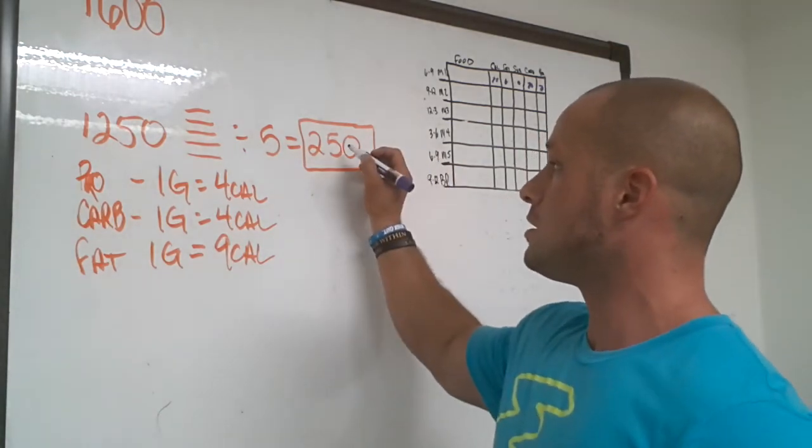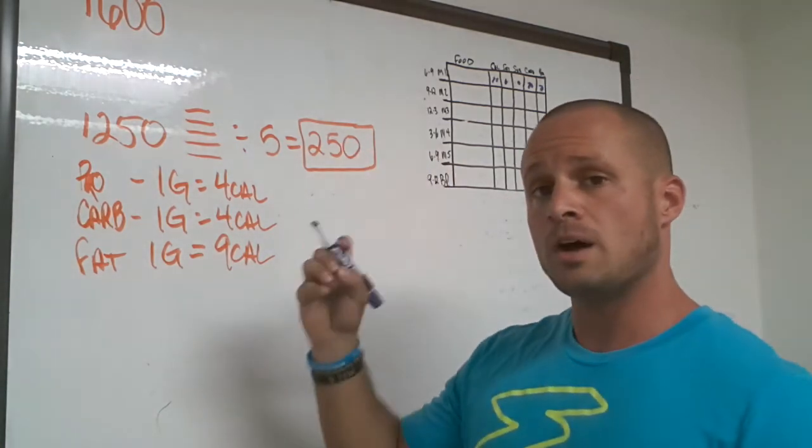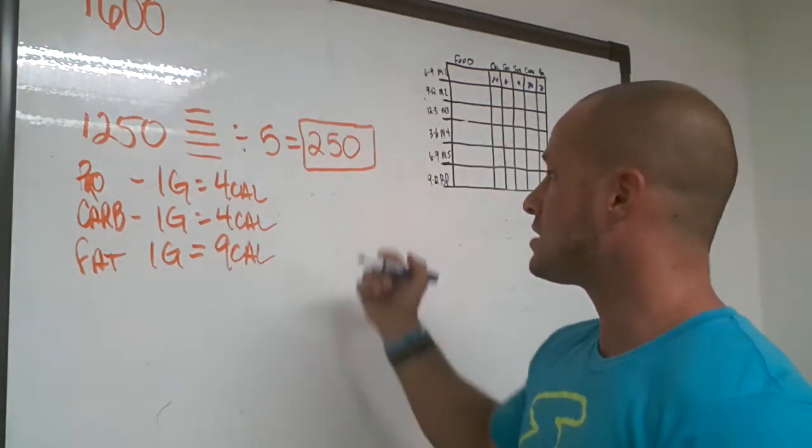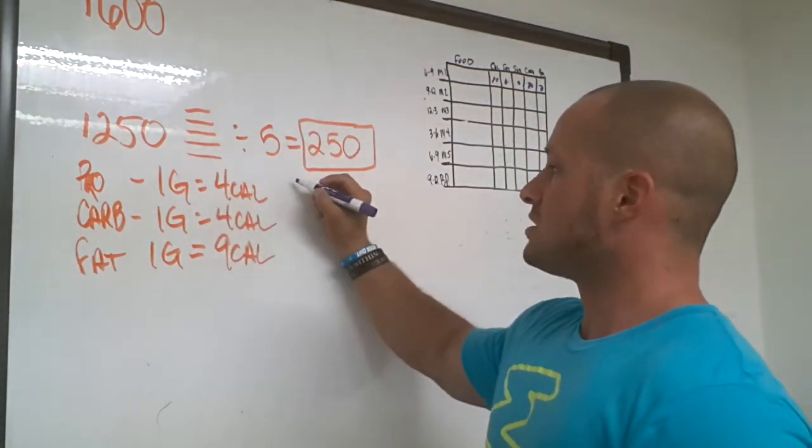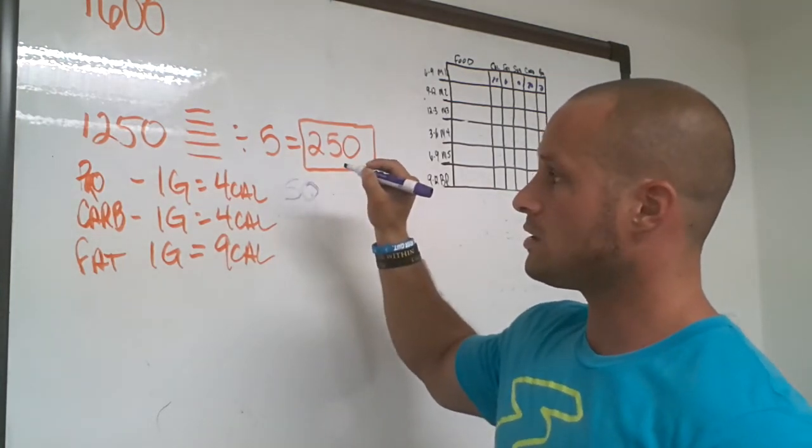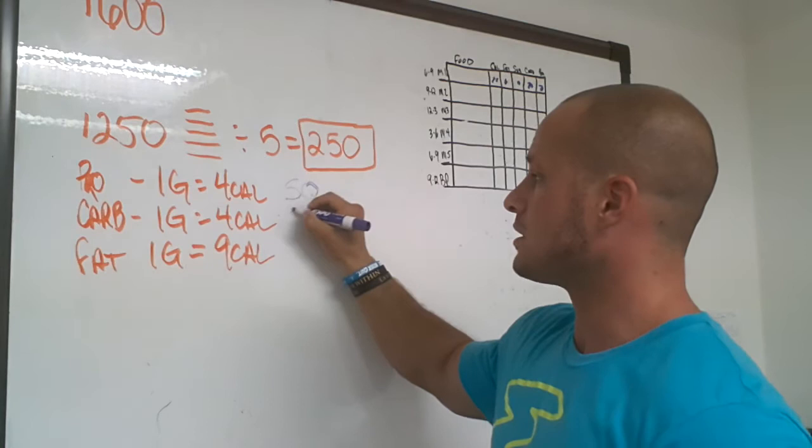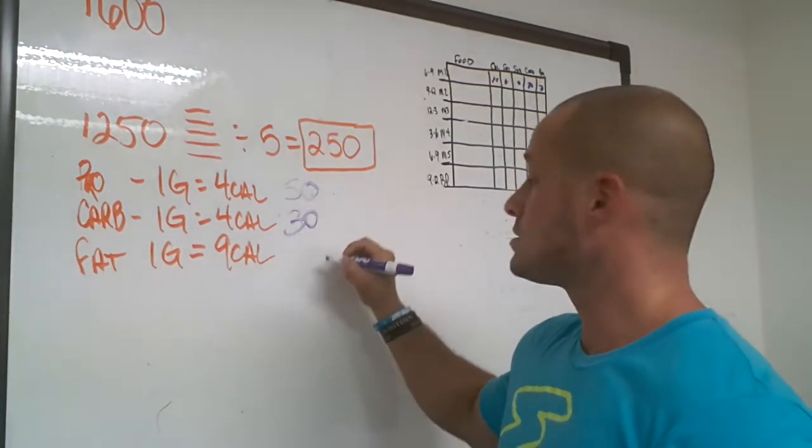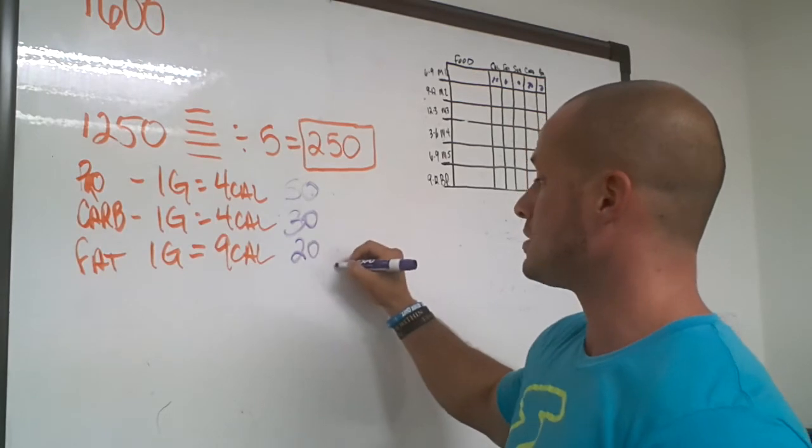So now I know how much we want per meal. But how do you figure out how much of what to get from where? Here's how it works. I want to get 50% of your calories from protein. I want to get 30% of your calories from carbs, and I want to get 20% of your calories from fat.